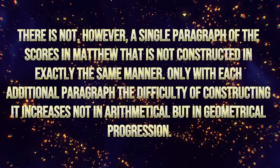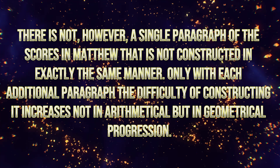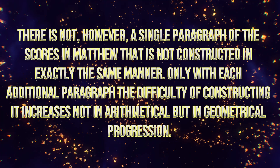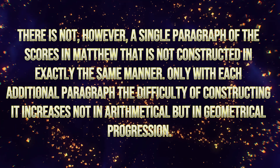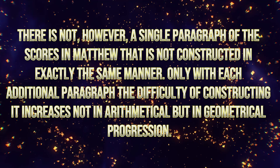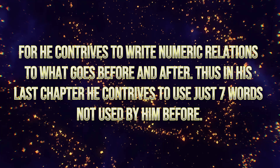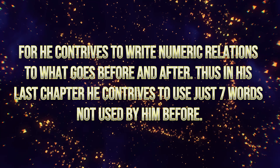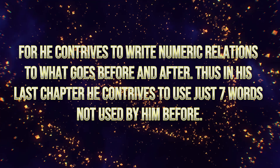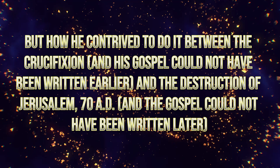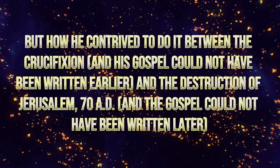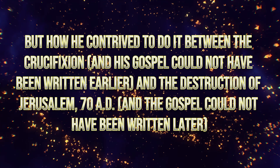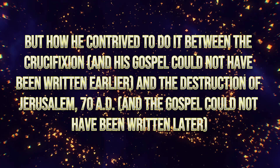There is not, however, a single paragraph of the scores in Matthew that is not constructed in exactly the same manner. With each additional paragraph, the difficulty of constructing it increases not in arithmetical but in geometrical progression, for he contrives to write numeric relations to what goes before and after. In his last chapter, he contrives to use just seven words not used by him before. But how he contrived to do it — between the crucifixion, when his gospel could not have been written earlier, and the destruction of Jerusalem in 70 AD, when the gospel could not have been written later.